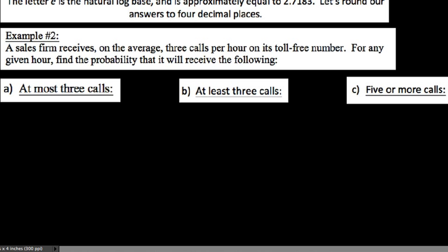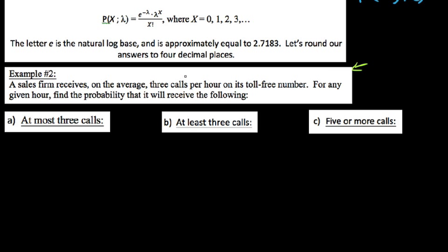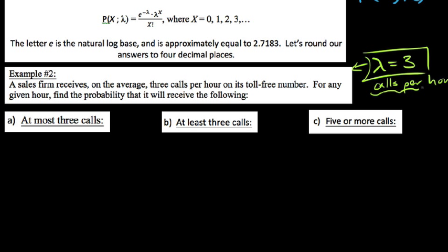Example number two: a sales firm receives, on the average, three calls per hour on its toll-free number. For any given hour, find the probability that it receives the following. Notice this is a Poisson problem because it's dealing with time — calls per hour — and we know the average number of calls per hour. So from this, I can tell you that lambda, the average number of occurrences, is three calls per hour.